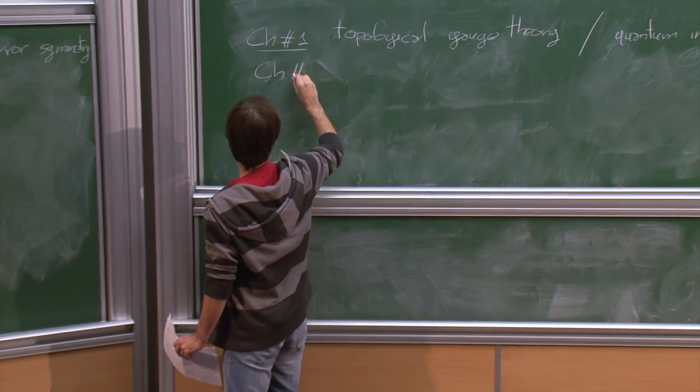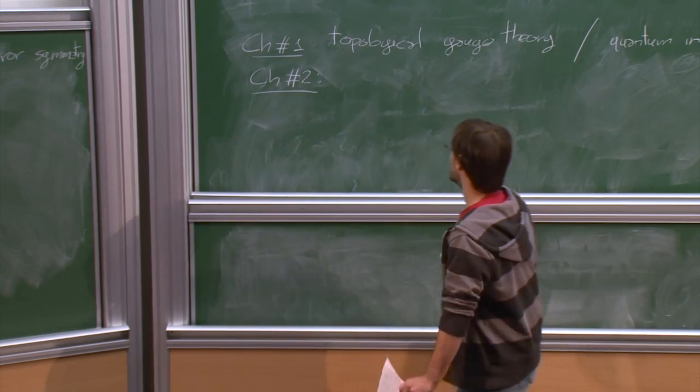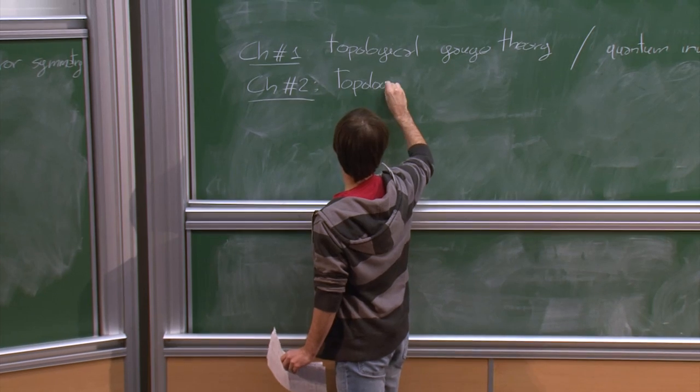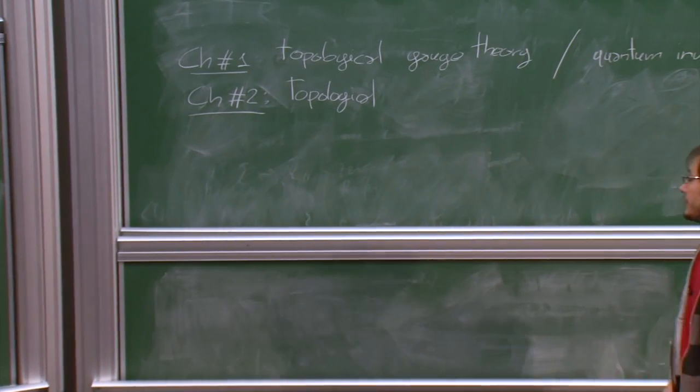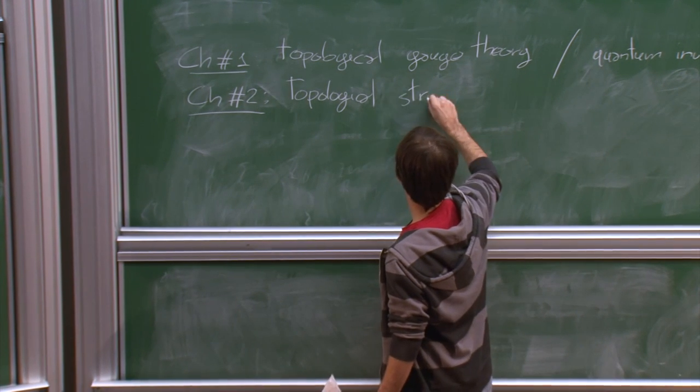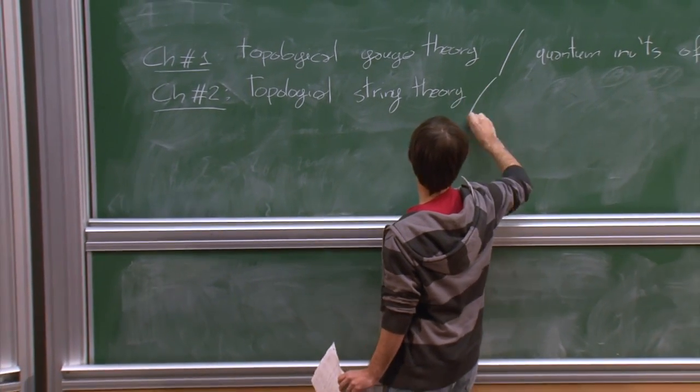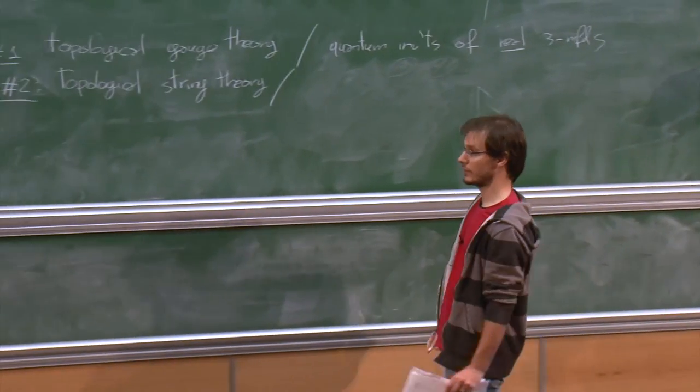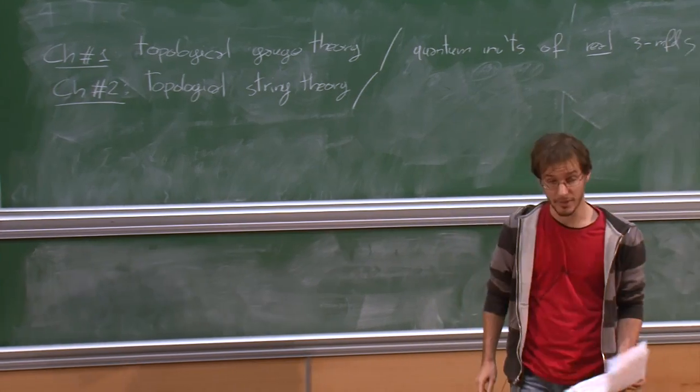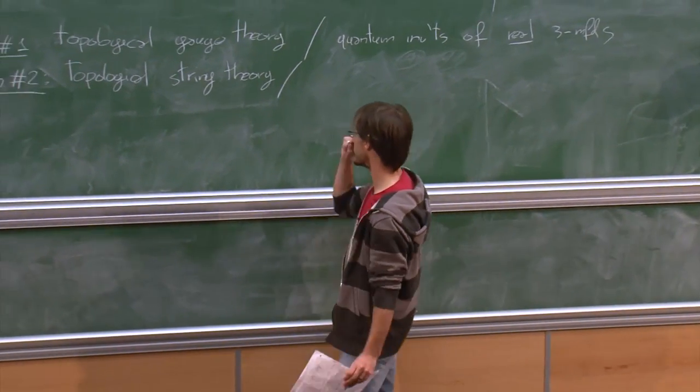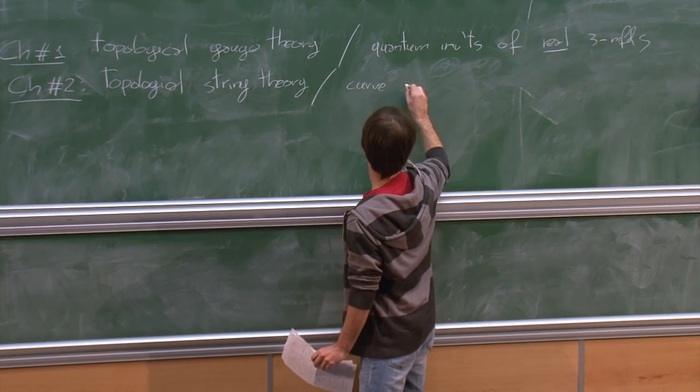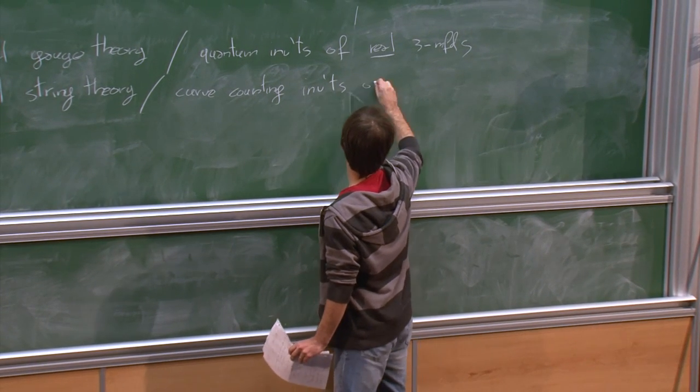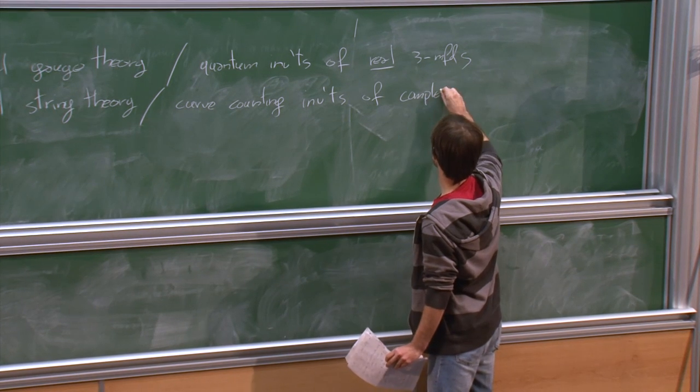It's a gauge theory which in my case will live on a real three-dimensional smooth manifold. From a mathematical point of view, this was proposed by Witten in order to describe a class of invariants that arise from quantum groups, which are quantum invariants of a real three manifold.